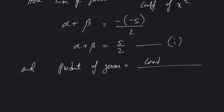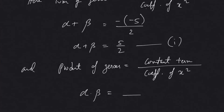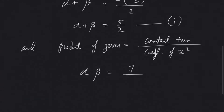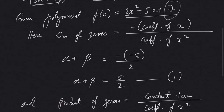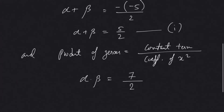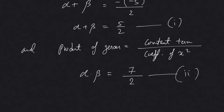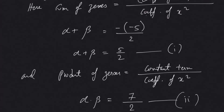The product of zeros of the given polynomial is given by the relationship: constant term upon coefficient of x squared. That gives us alpha times beta equals 7 by 2. We mark this as Equation 2. So from the given polynomial, sum of zeros is 5 by 2 and product of zeros is 7 by 2.